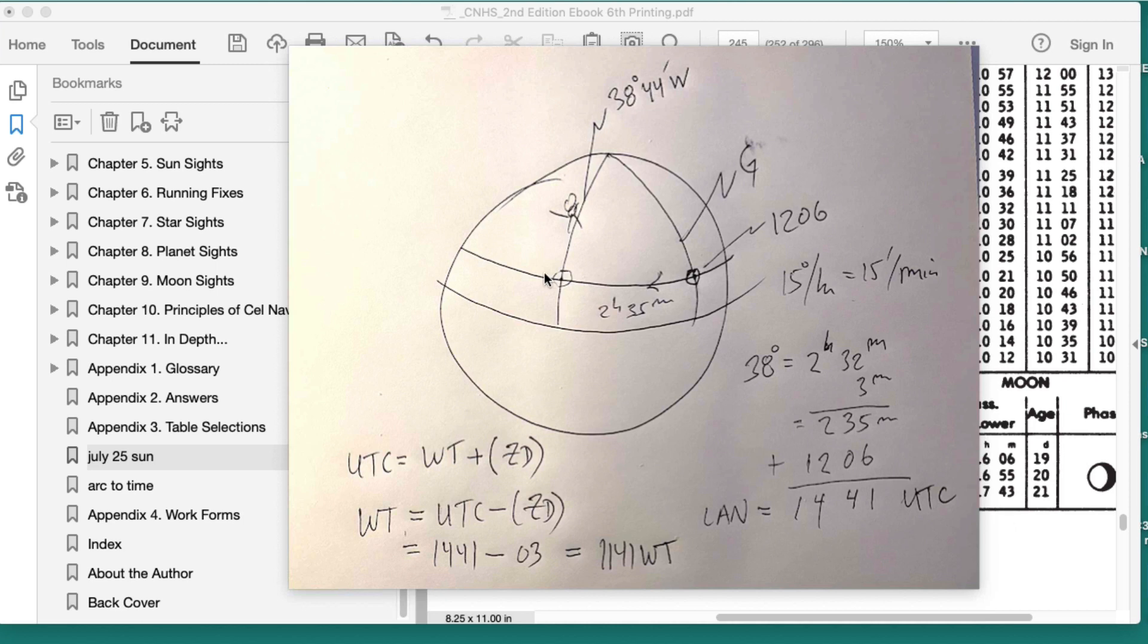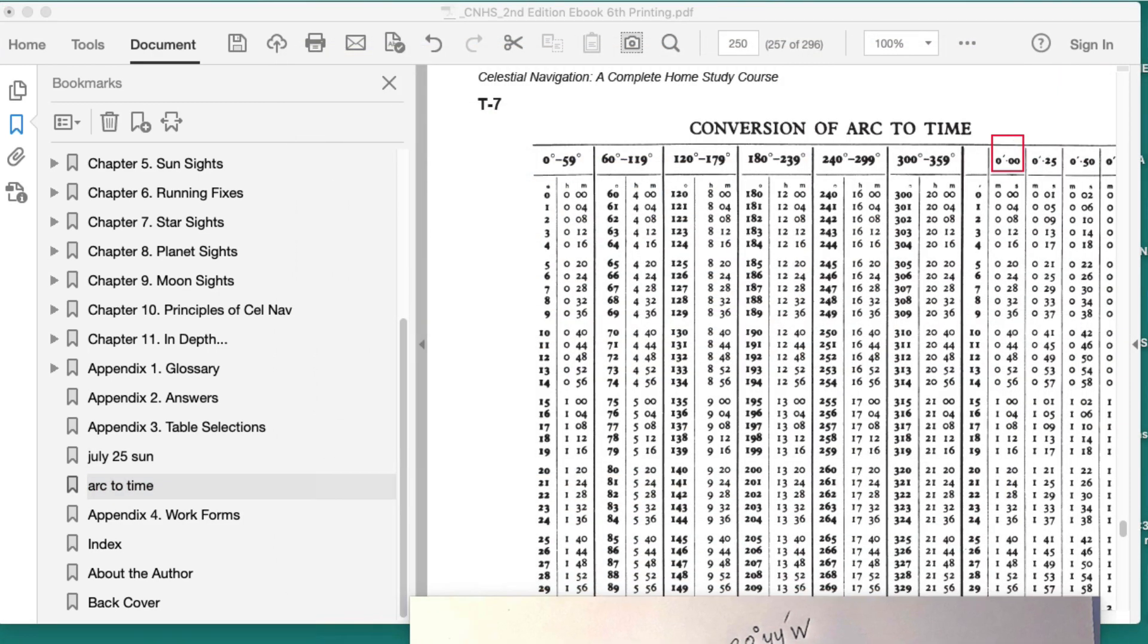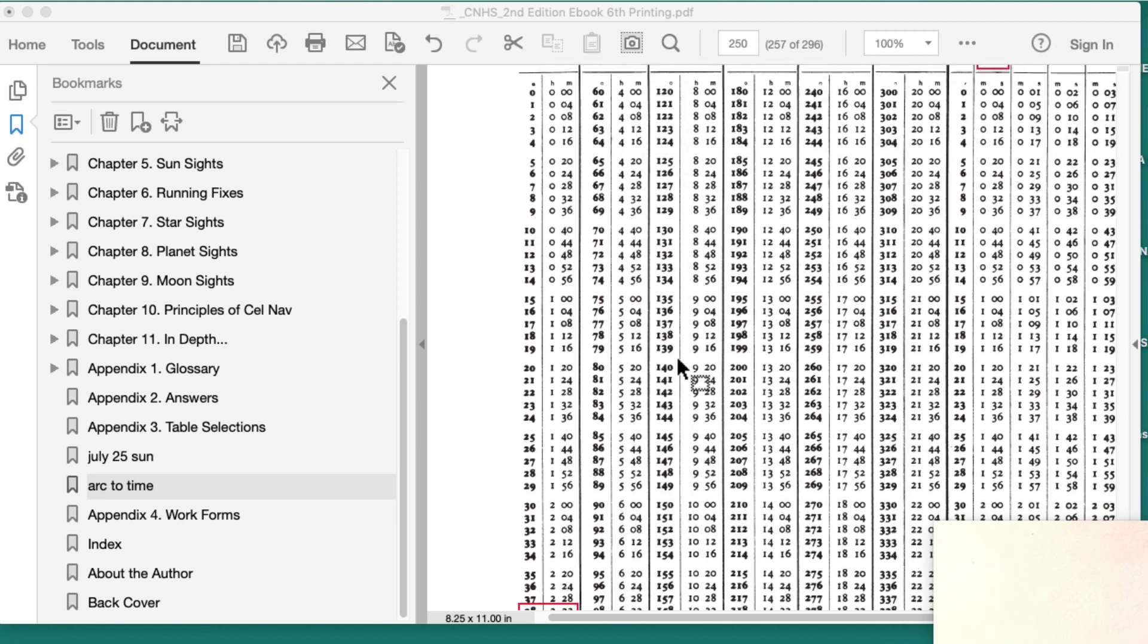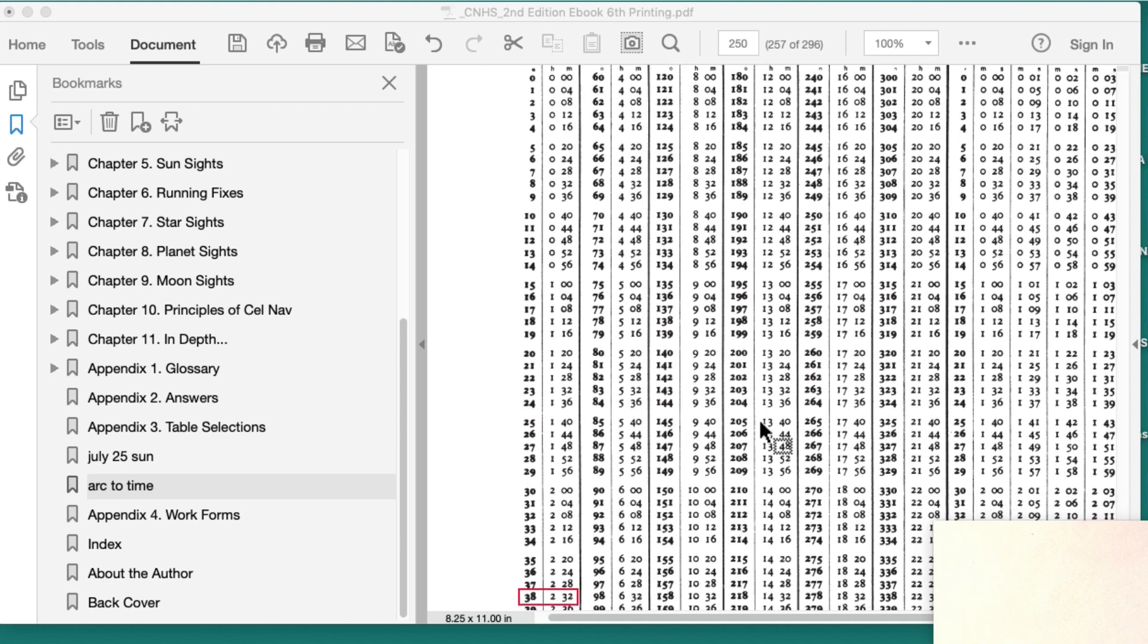Now I know the sun was here at 12:06, and it's moving this way towards me. This will be the time of local apparent noon when this is due south of me, right here. So I have to find out, at 15 degrees per hour, how long does it take the sun to get over here? And that we get from the arc to time table, which is in the back here.